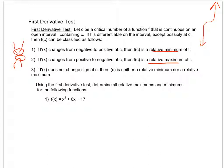If our slope does not change sign — like on the cube function, where the derivative is positive, momentarily hits zero, then remains positive — it's not a maximum or a minimum. It's just a slope of zero; it doesn't actually form a hill or valley.